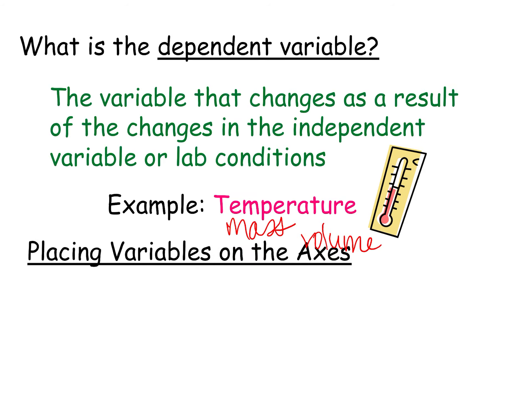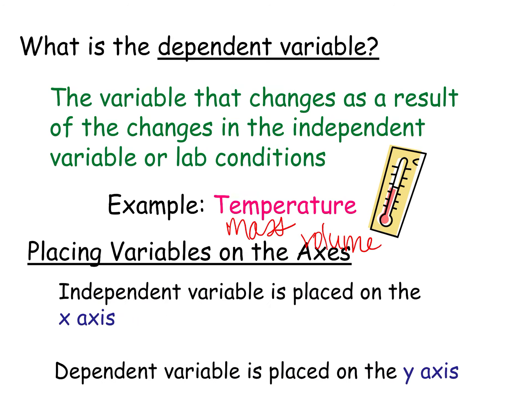When you're making a graph, you're going to place your variables on the axes. Independent is on the x, dependent is on the y. So here we have our y, here we have our x, this is where we have our independent, this is where we have our dependent.